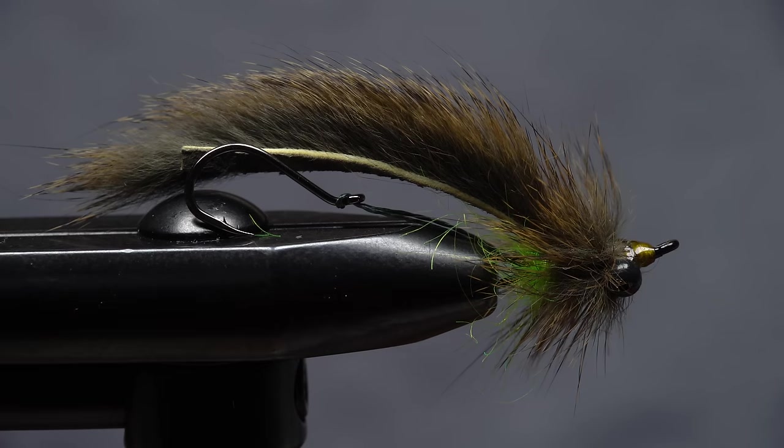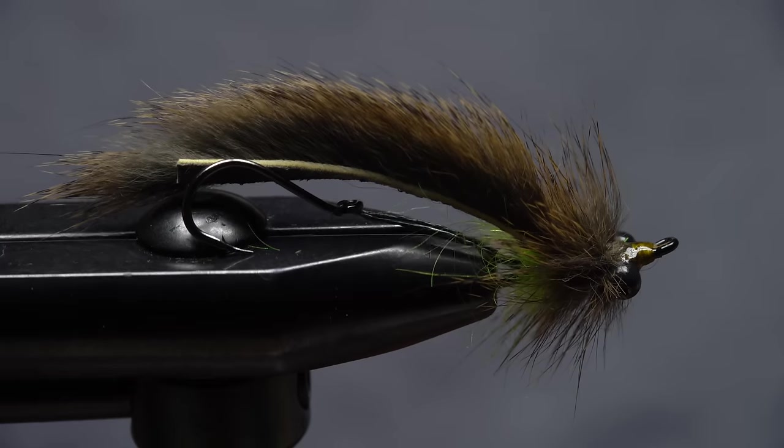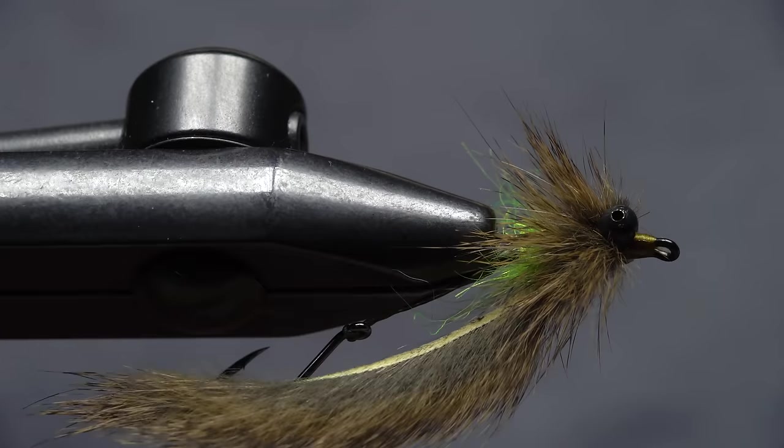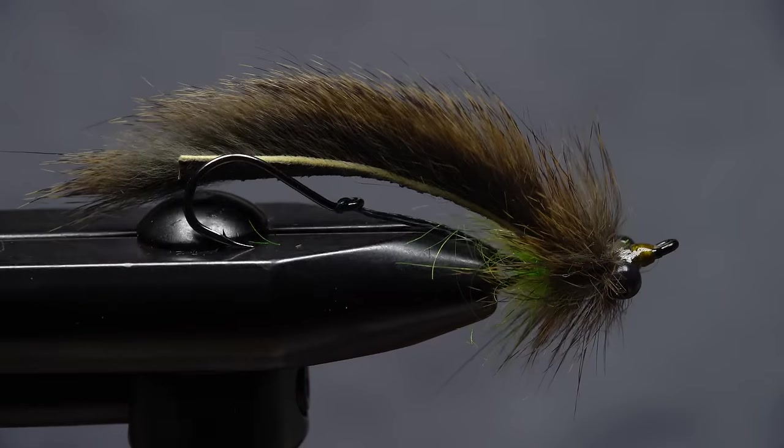Once the cement sinks in and dries, your intruder leech is ready to fish. Simply swung down and across or pulsed through the swing, this is a pattern that really produces.